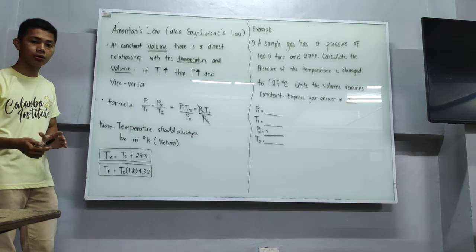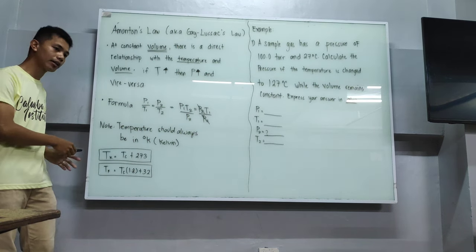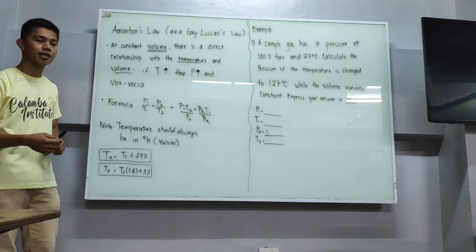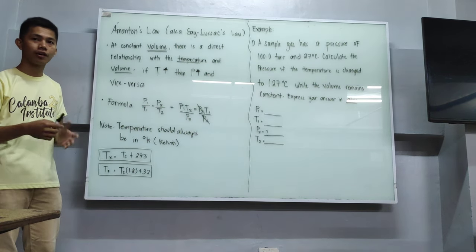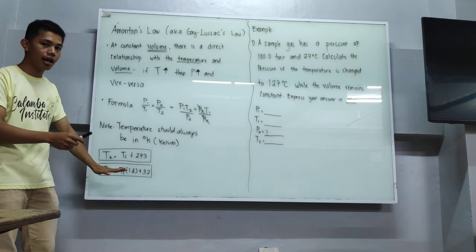That's how we can convert between temperature units — degree Celsius into degree Kelvin, degree Celsius into degree Fahrenheit, degree Fahrenheit into degree Celsius, and degree Celsius into degree Kelvin.